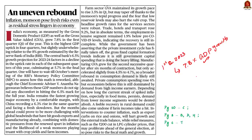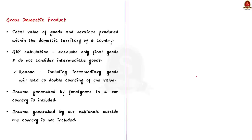To understand the article we must familiarize ourselves with basic terms like GDP and GVA. GDP stands for Gross Domestic Product and refers to the total value of goods and services produced within the domestic territory of a country — in other words, the market value of all final goods and services produced within the boundary of a nation during one particular year.